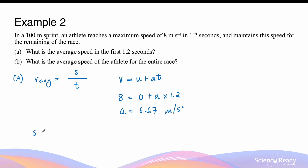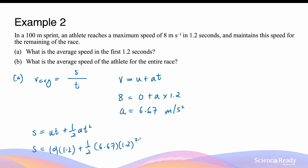We can then find the displacement using the kinematic equation s = ut + ½at². s equals 0 times 1.2 plus half times 6.67 times 1.2 squared. This yields a displacement of 4.8 meters. This means the average velocity in the first 1.2 seconds is the displacement divided by the time, which is 4 meters per second.